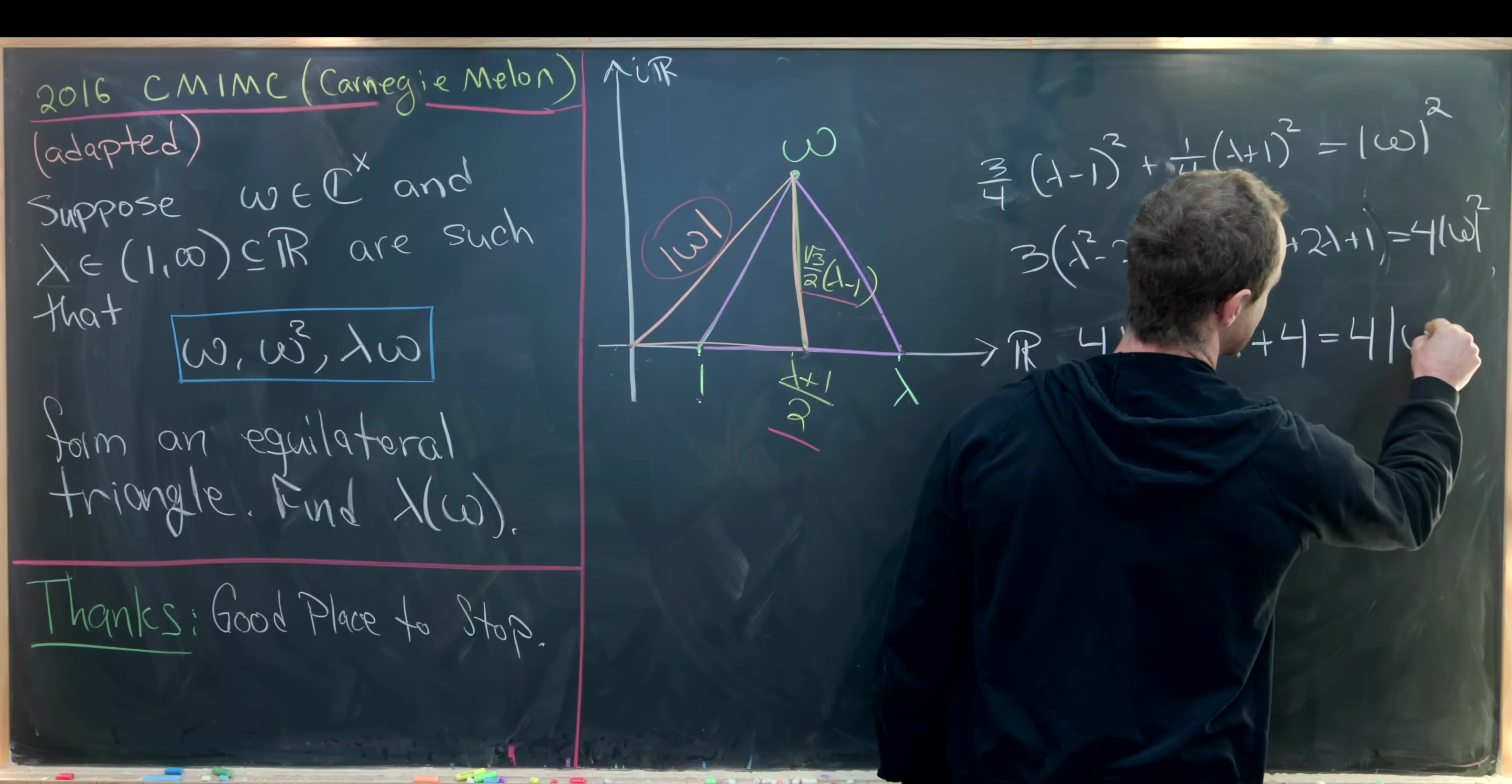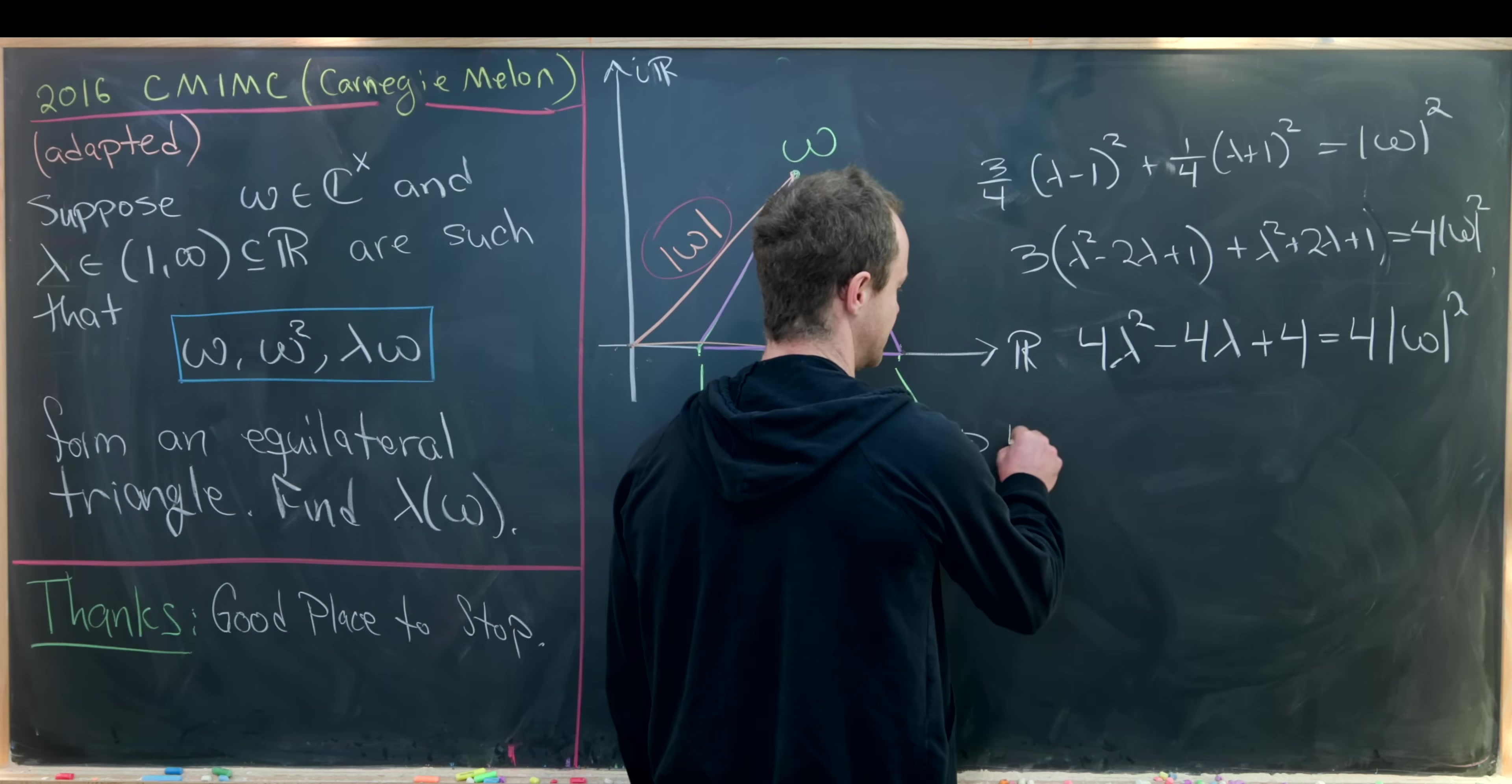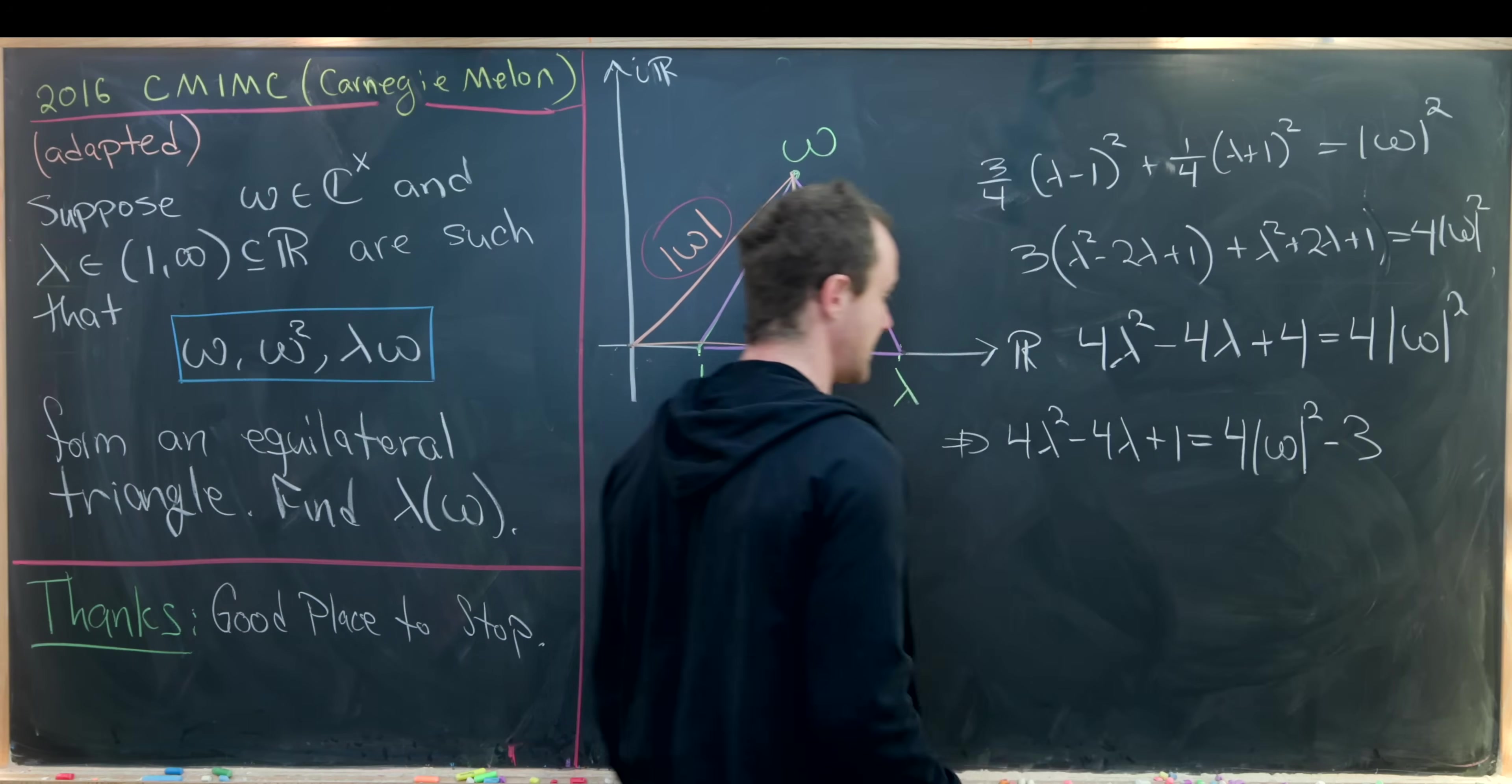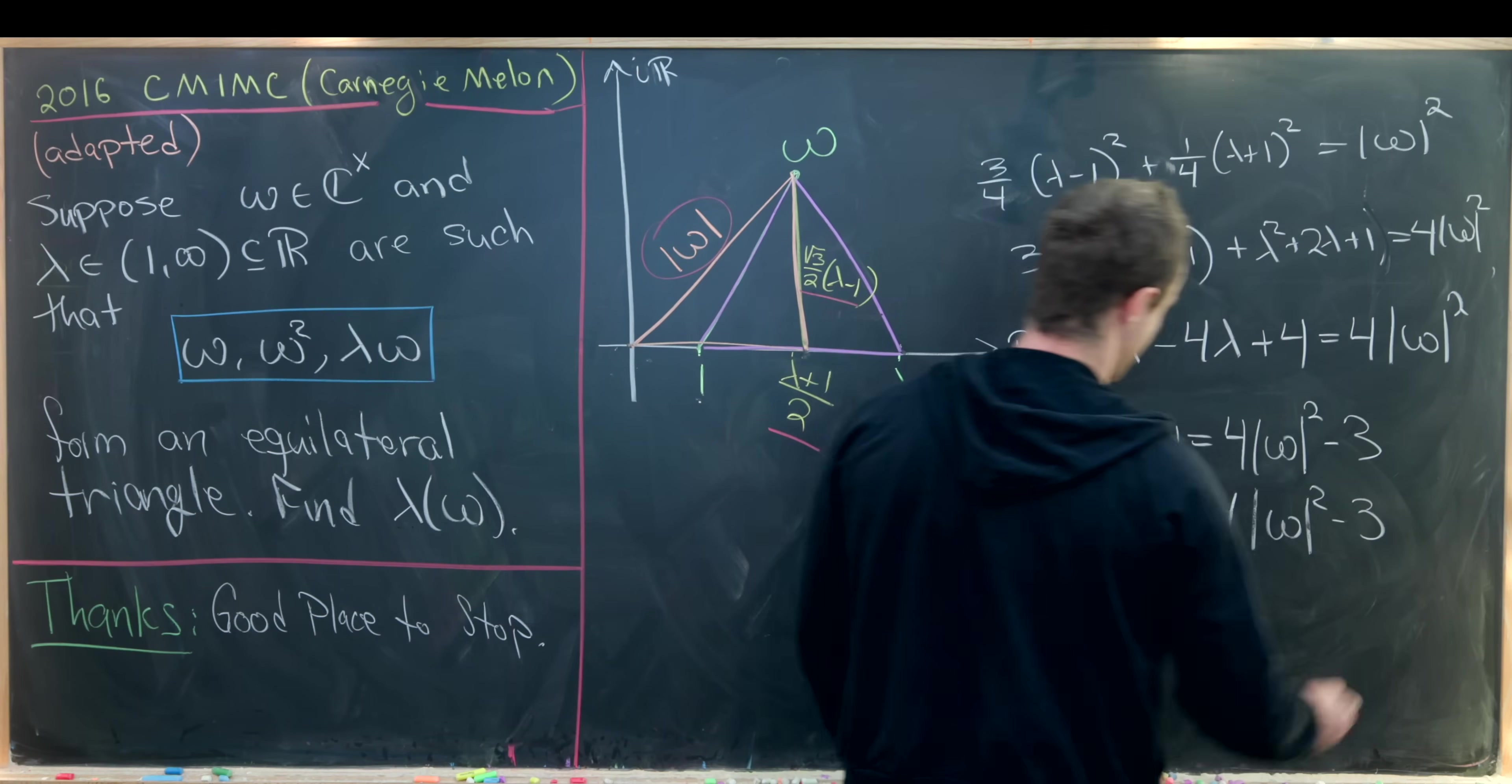Again, that equals 4 times the magnitude of omega squared. And now we can see here that we have almost a perfect square binomial. If we subtract 3 from both sides, we will have a perfect square binomial. So let's do that. We'll have 4 lambda squared minus 4 lambda plus 1 equals 4 times the modulus of omega squared minus 3.